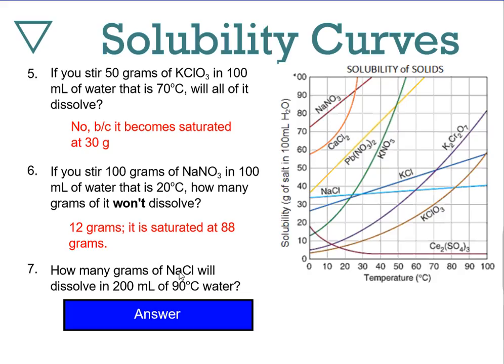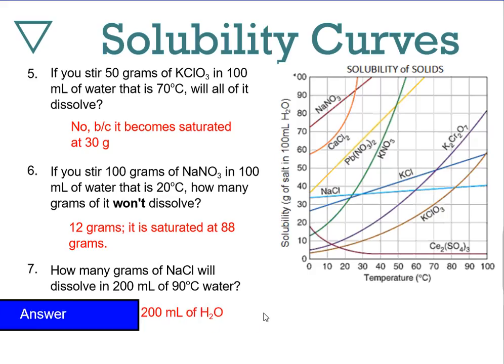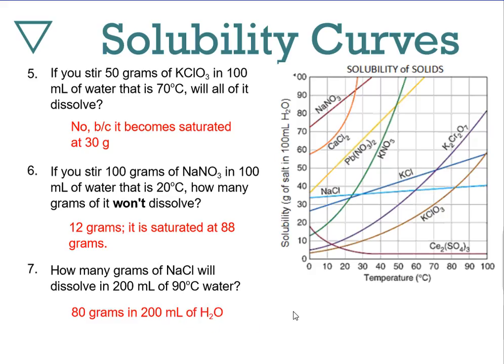How many grams of sodium chloride will dissolve in 200 mL of water at 90°C? Sodium chloride — the light blue curve — shows about 40 grams dissolve at 90°C per 100 mL. For 200 mL, we double that value: 80 grams of sodium chloride would dissolve in 200 mL of water.